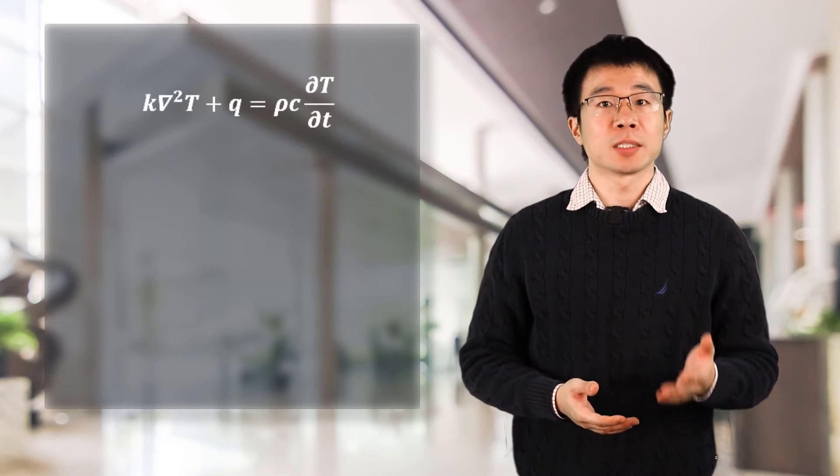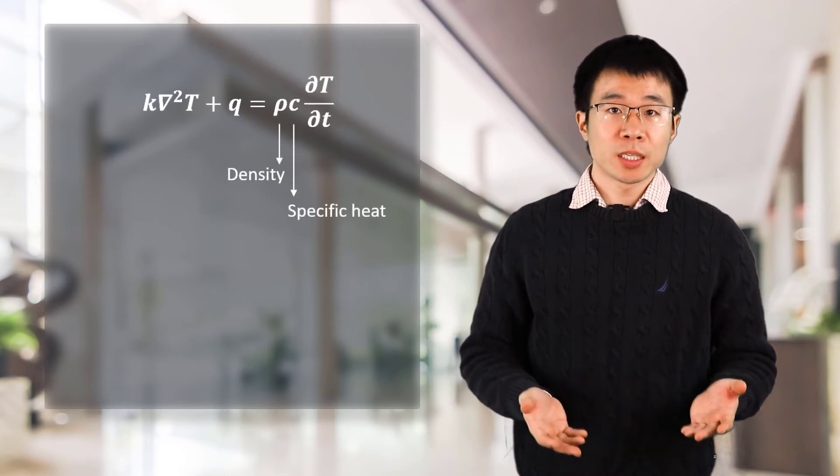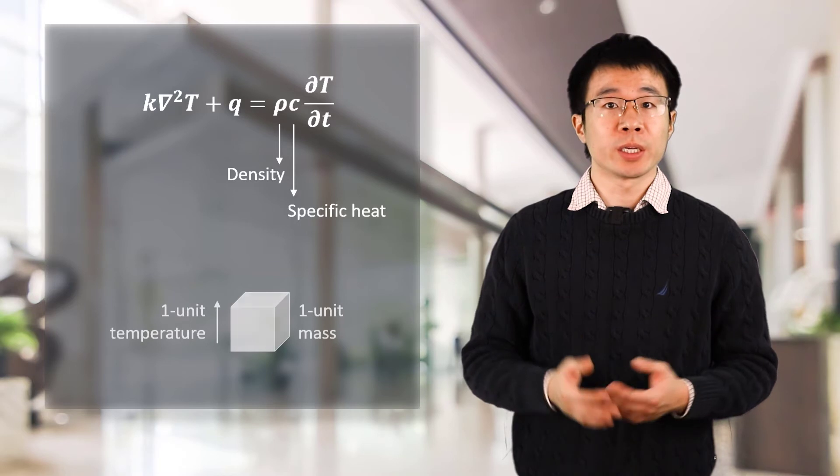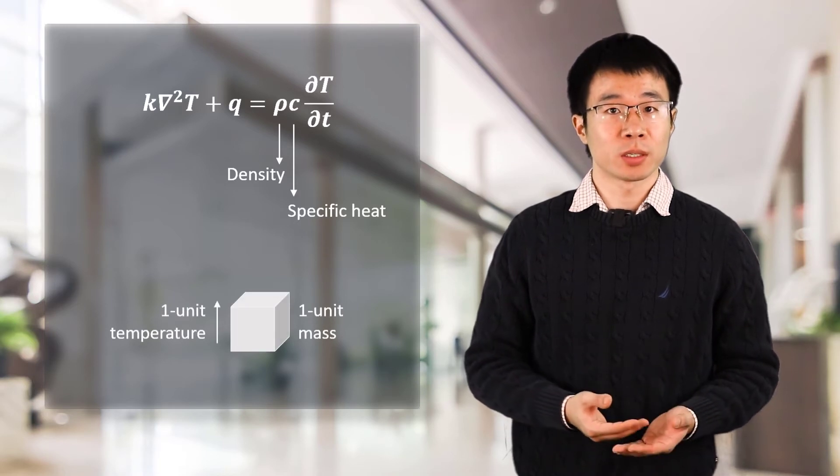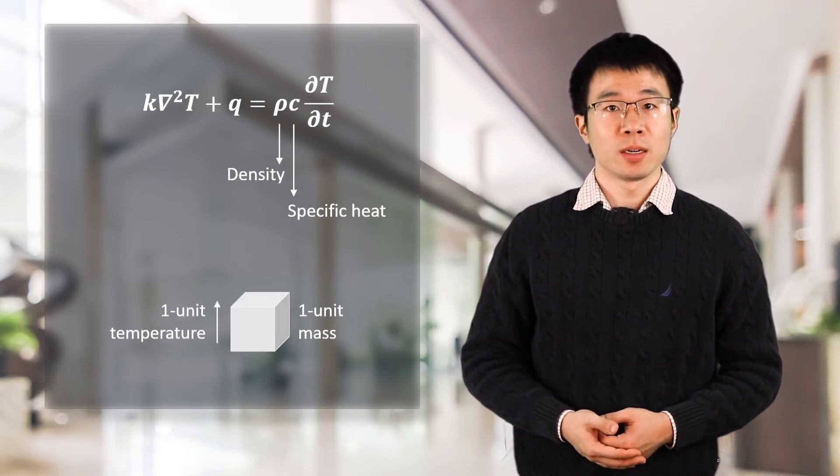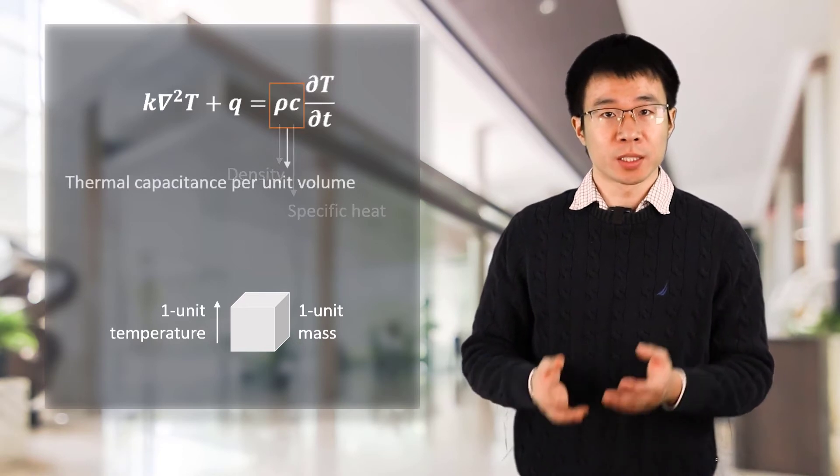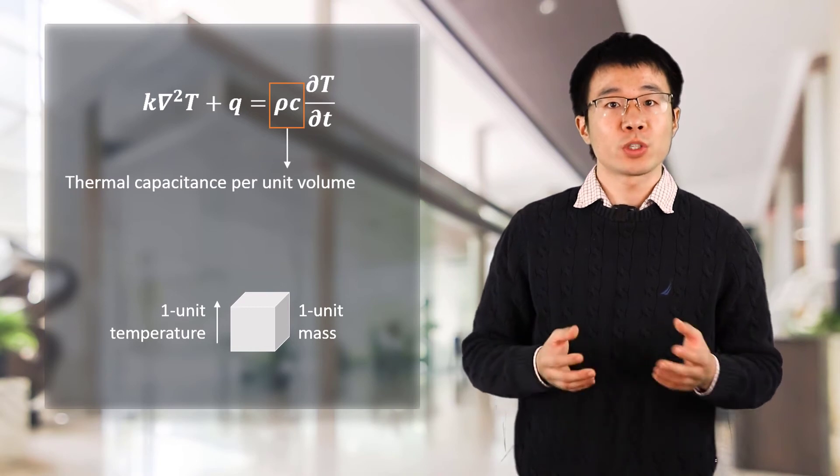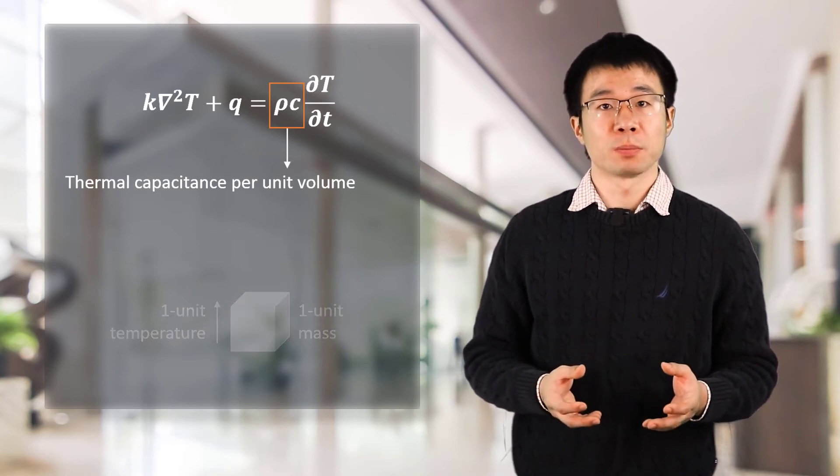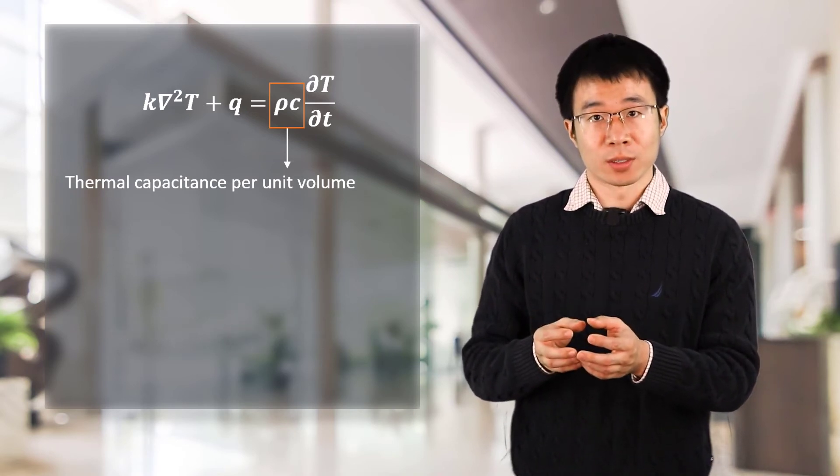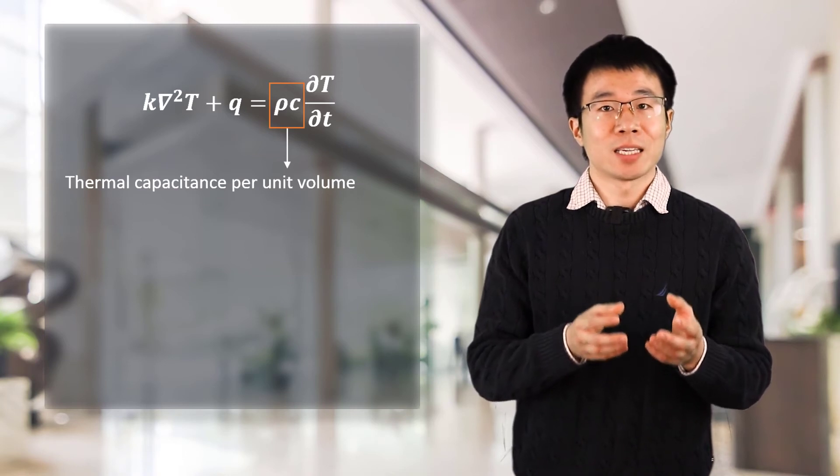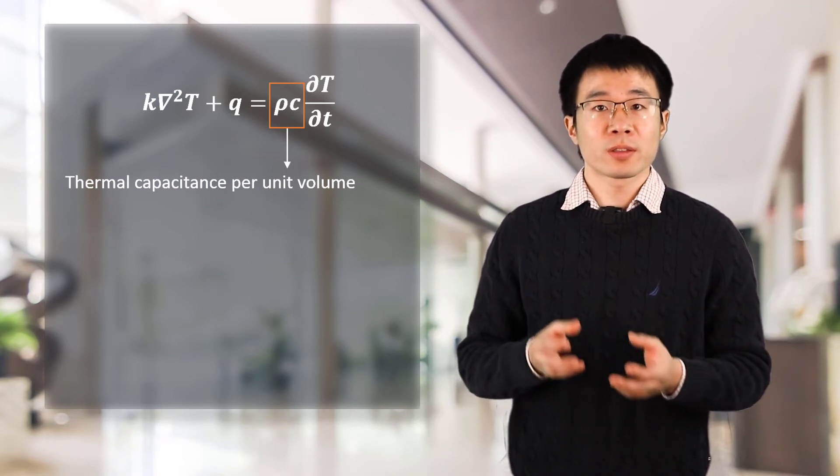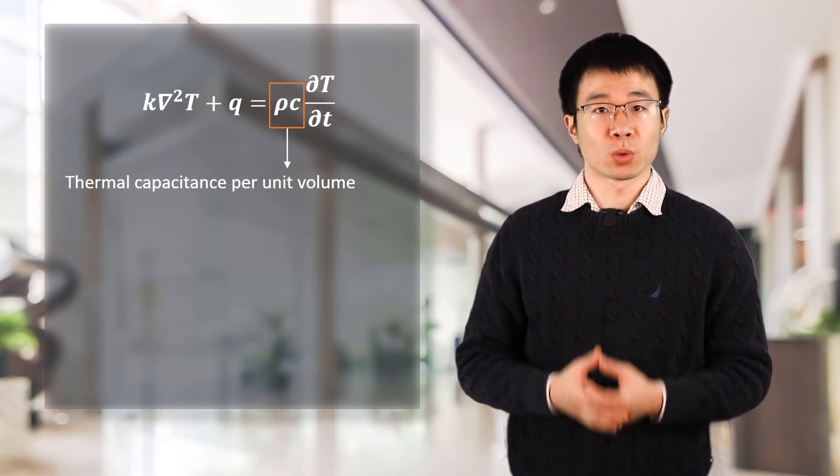Coming to the transient term in governing equation, we see the product of density and specific heat. Specific heat is the amount of energy we need to add to a unit mass of a substance to raise its temperature by one unit. The product of density and specific heat is the thermal capacitance per unit volume, which indicates the ability of a unit volume body to store thermal energy. The larger the mass and specific heat are, the more thermal energy a body will be able to store.